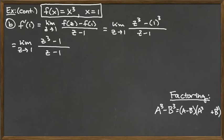That middle term is what you get when you multiply the first and second thing in that first factor together: a times negative b gives negative ab, but you switch the sign to positive, so it's plus ab as the middle term. Just as a side note, if we're factoring a sum of cubes, it takes the same form: a plus b as the first factor, and in the second factor the first term is positive a squared and the last term is positive b squared.